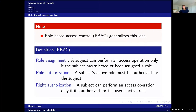So there is some type of access control on the roles as well. For instance, if we have two roles — teacher and student — the students shouldn't be able to switch to the teacher role and set a grade on themselves. So there should be some access control to these roles. The final rule is about right authorization, which says that a subject can perform an access operation only if it's authorized for the user's active role — that role must be authorized to perform the access operation on a particular object.